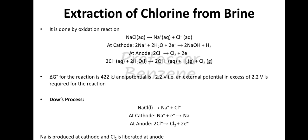The ΔG° for the reaction is 422 kJ and the potential is −2.2 volts. That means an external voltage in excess of 2.2 volts is required to carry out the reaction. Externally 2.2 volts must be applied because the cell potential is −2.2 volts and ΔG is +422 kJ.